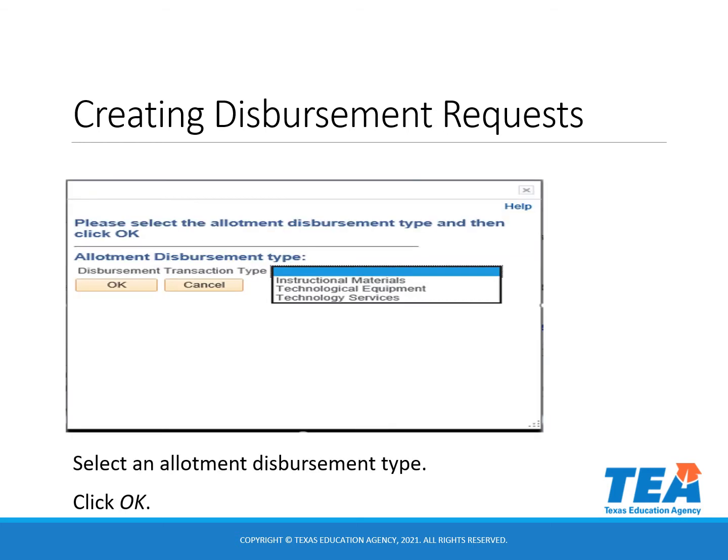After clicking next, a disbursement type box will appear where you have a choice of three types of disbursements to choose from: Instructional Materials, Technological Equipment, and Technology Services. After choosing a disbursement type, click OK.